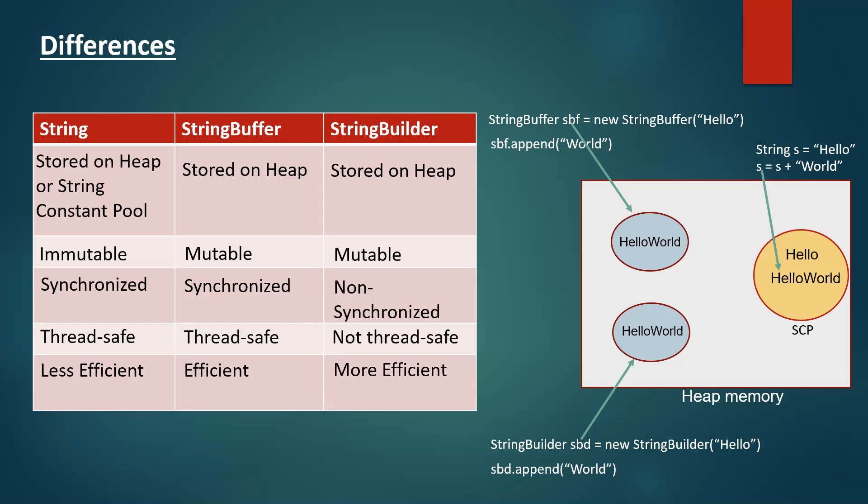StringBuilder is very fast and more efficient since it is non-synchronized and not thread-safe, meaning there is no locking and unlocking on the objects, so it is faster. One more difference not shown here: String and StringBuffer were introduced in Java 1.0, and StringBuilder was introduced in Java 1.5.